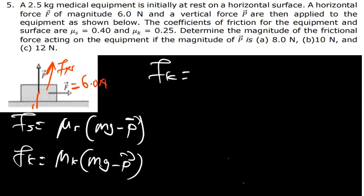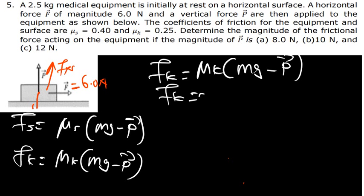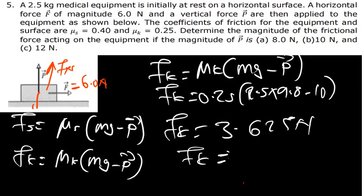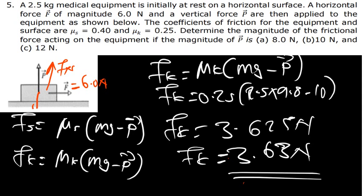We now find the kinetic friction: fk = μk(mg − P) = 0.25 × (2.5 × 9.8 − 10) = 0.25 × (24.5 − 10) = 0.25 × 14.5 = 3.625 N, which we round to 3.63 N. So for Part B, the friction force is 3.63 N.